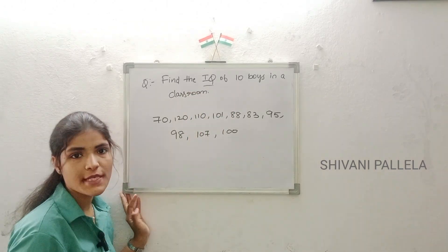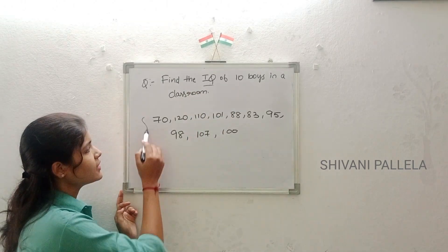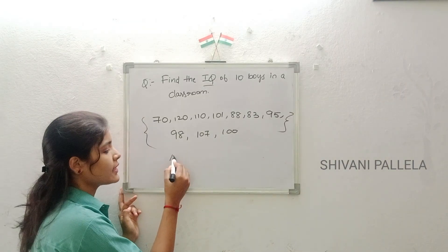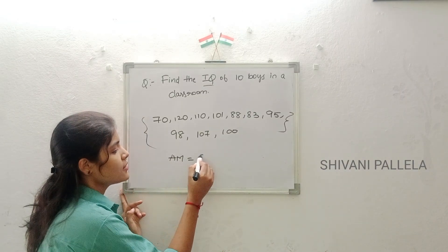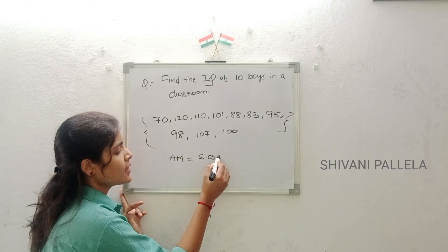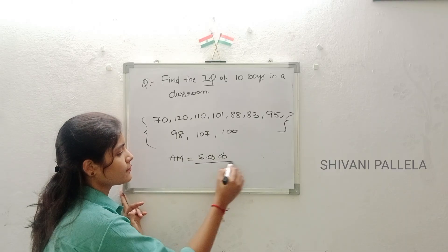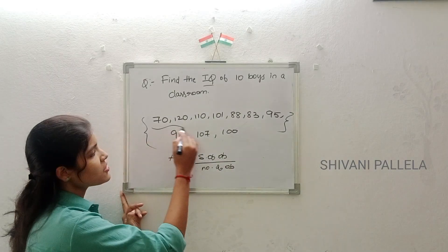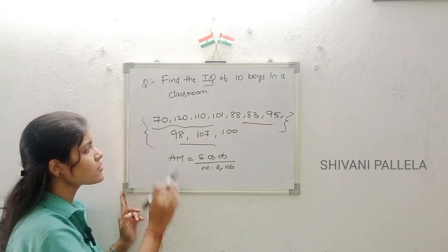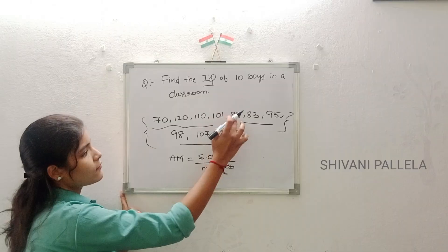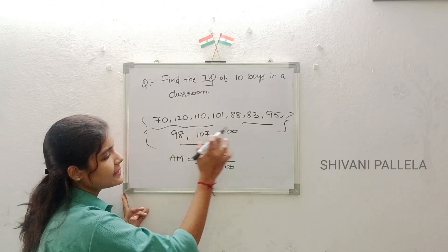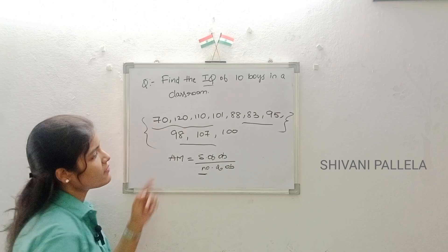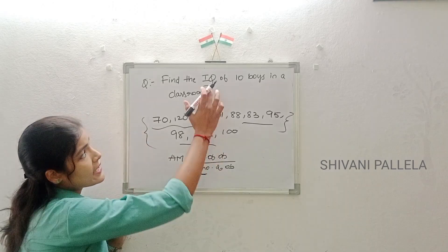Here is the question: Find the IQ of 10 boys in the classroom. They have given the numbers. The formula for arithmetic mean in individual series — direct method — is sum of observations by number of observations. The sum of observations is all the given numbers, and the number of observations is 10, counted as 1 through 10.